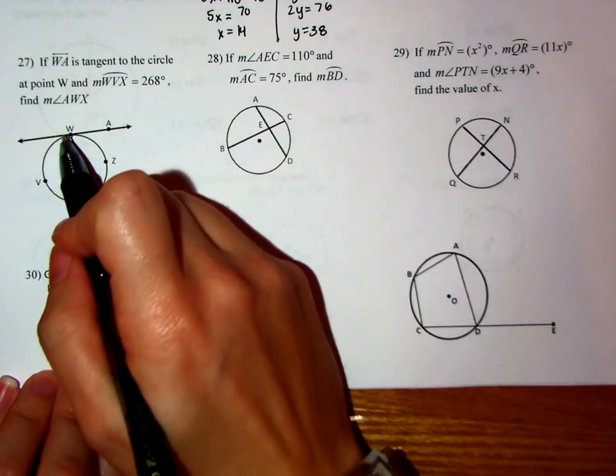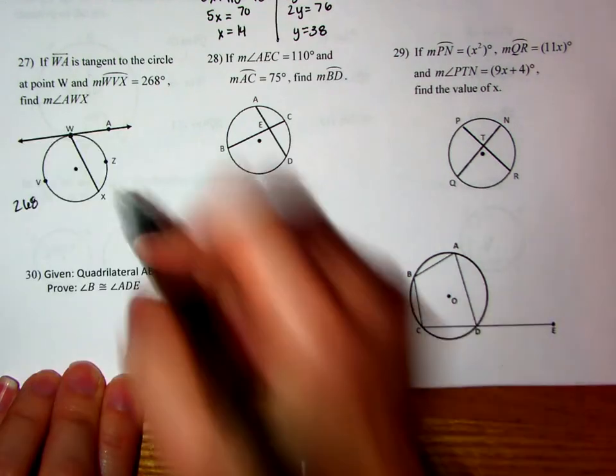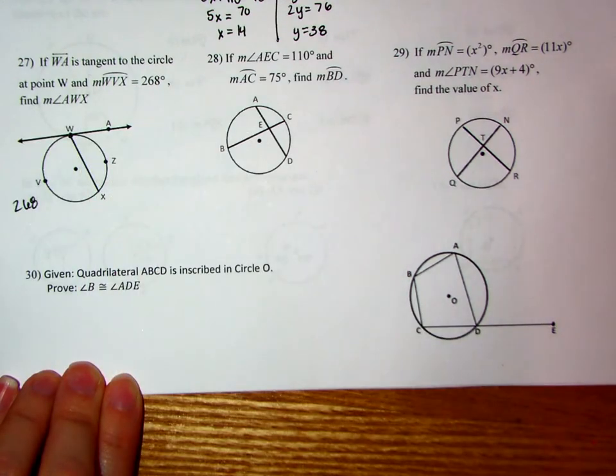And then it says that the measure of arc WVX here is 268. So the first thing we're going to find out is how much is left. So we're going to do 360 minus 268.